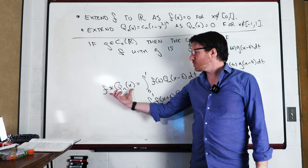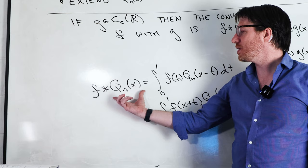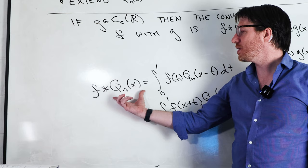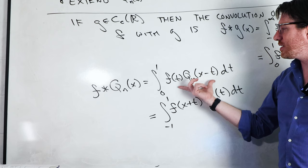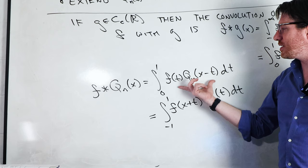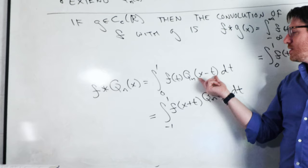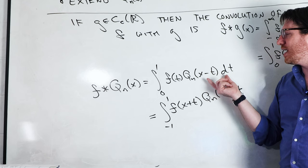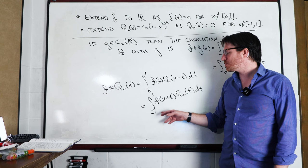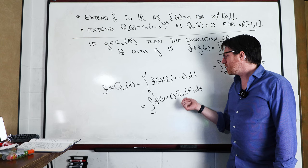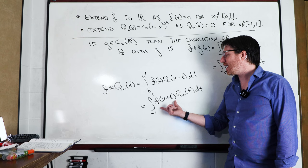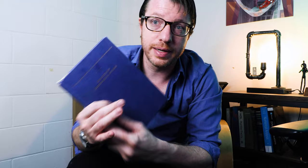So f convolved with qn(x) is what's actually doing our approximation — this is doing all the hard work. Here qn(x) is cn times (1 minus x squared) raised to the nth power, and the convolution can be restricted to [0, 1]. As n goes to infinity, we're emphasizing one particular piece of f(t minus x), specifically what happens at t equals 0, which is f(x). So f(x) ends up carrying the entire weight of everything.